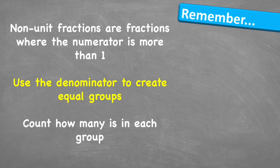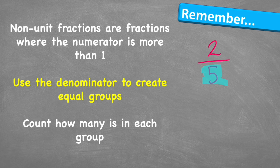Let's look at what to remember. A non-unit fraction is a fraction where the numerator — the number at the top — is more than one. We use the denominator, the number at the bottom of our fraction, to create equal groups. Then we share our quantity out and count how many is in the numerator's number of groups — that will give us our total answer.